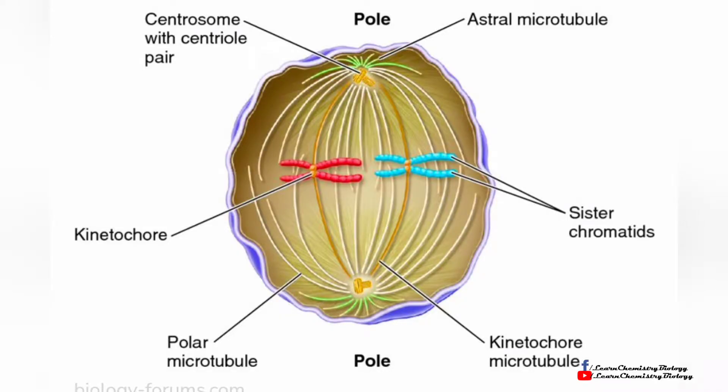Chromosomes are the main participants of mitosis and meiosis. From pole towards right you can see: astral microtubule, sister chromatids, kinetochore microtubule, and polar microtubule. The kinetochore joins both sister chromatids, and then there is the centrosome with centriole pair.